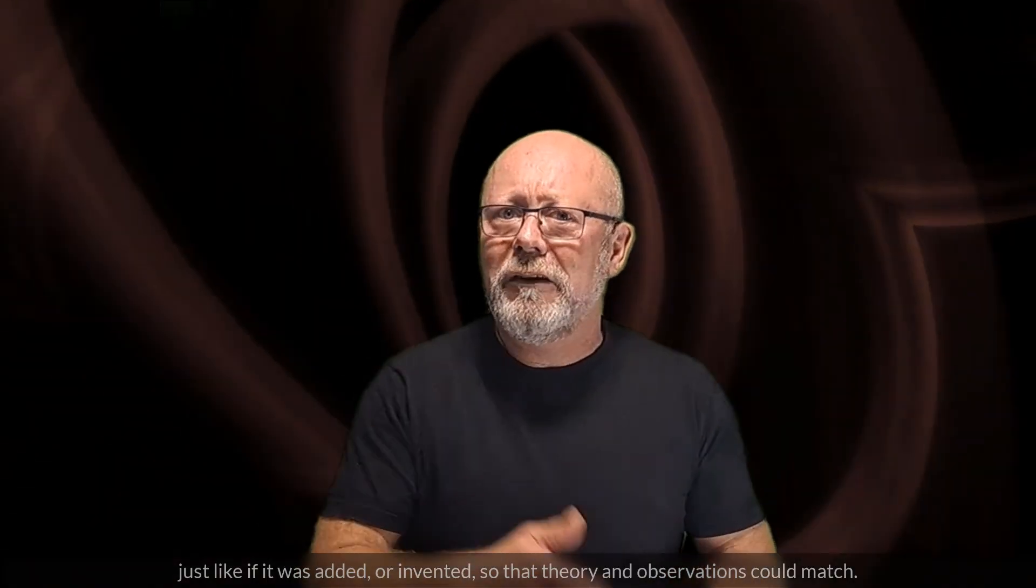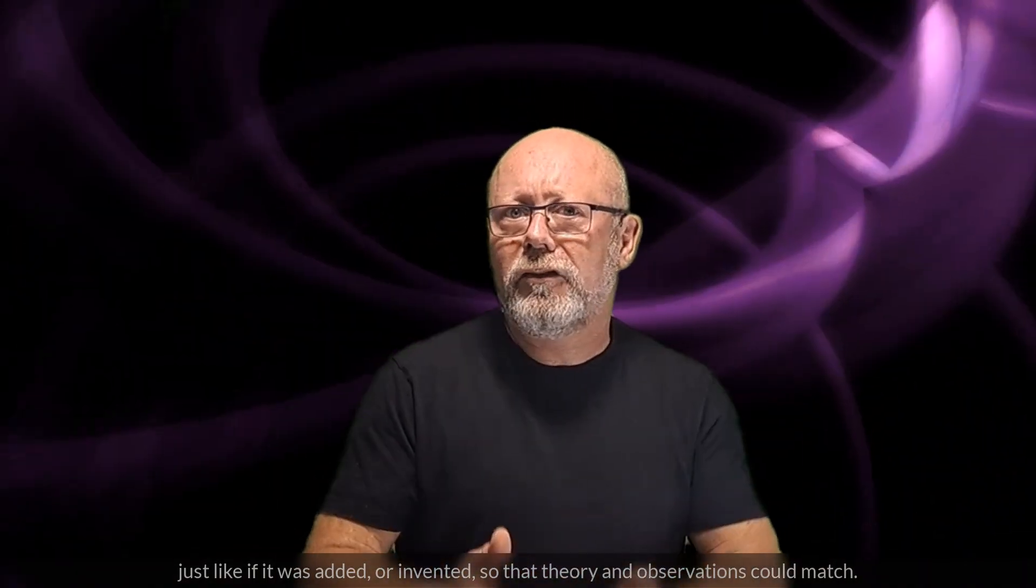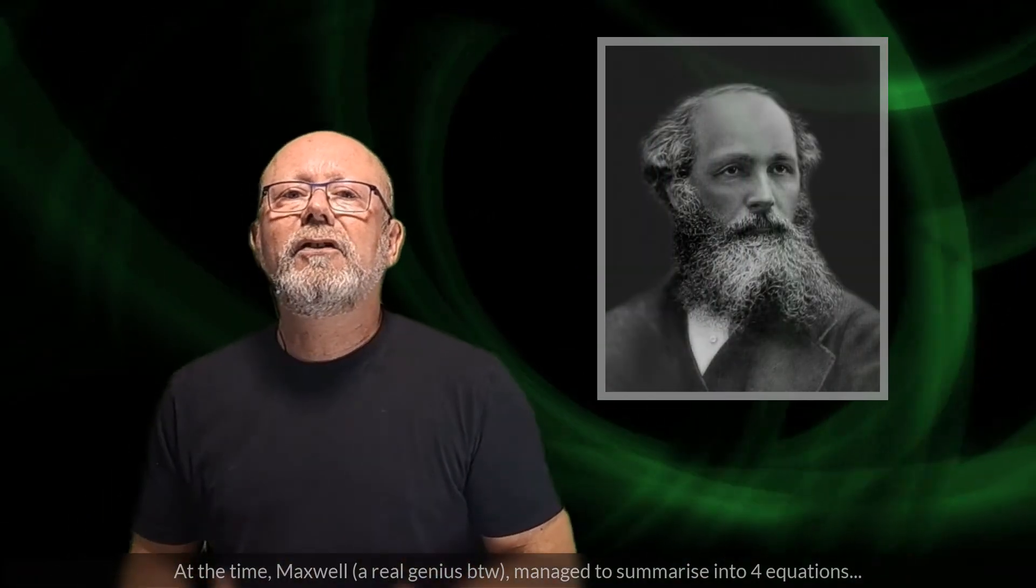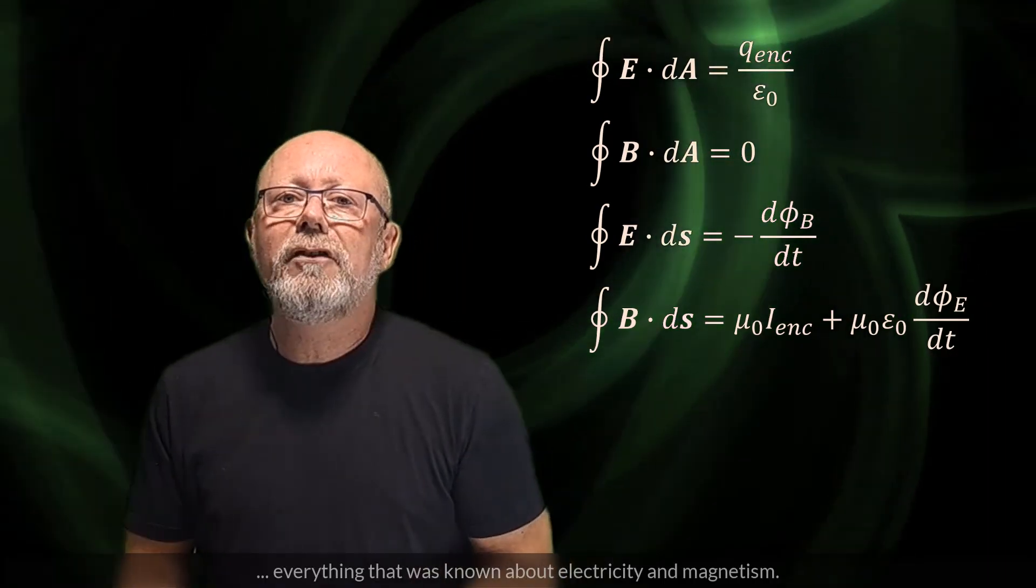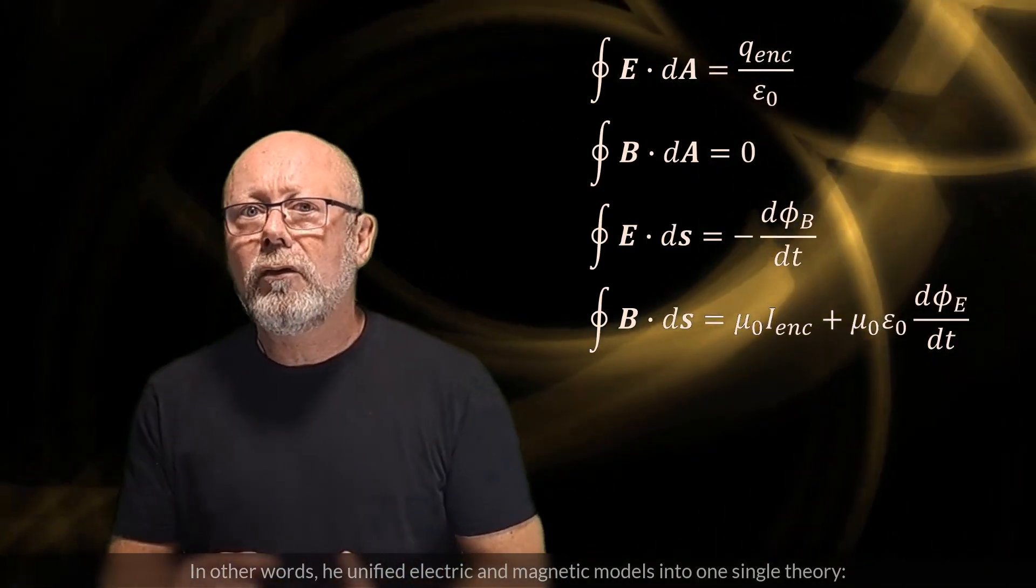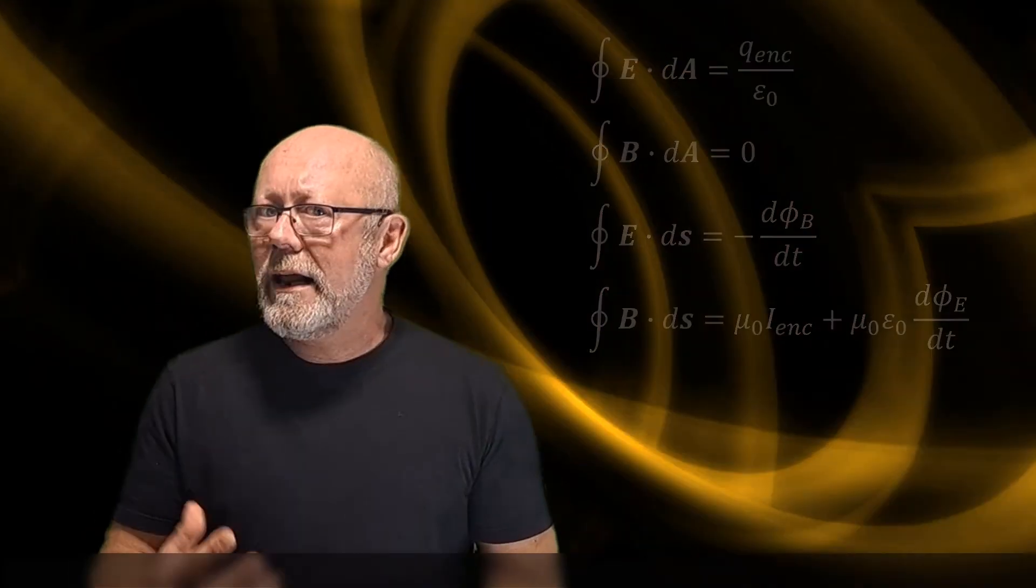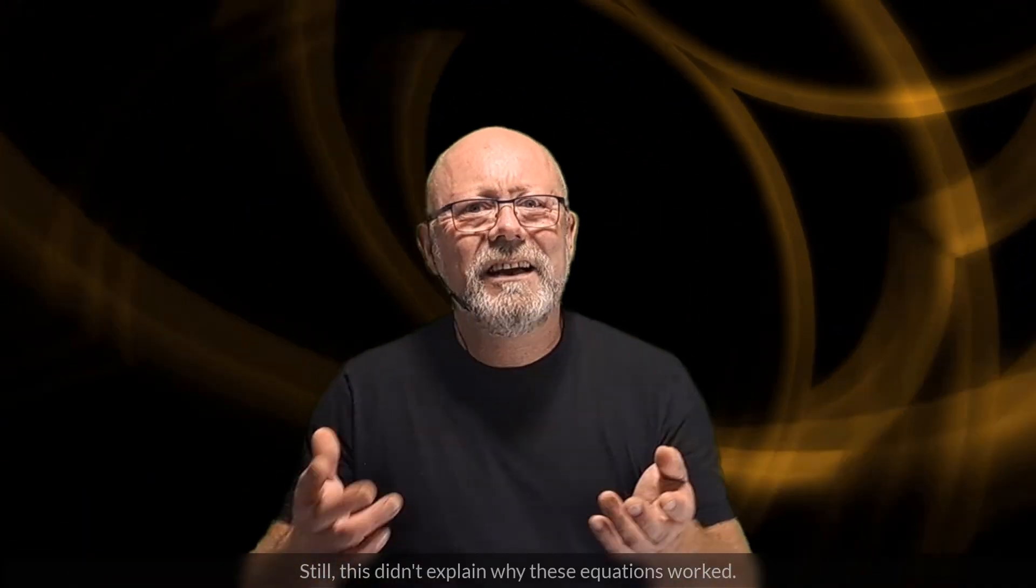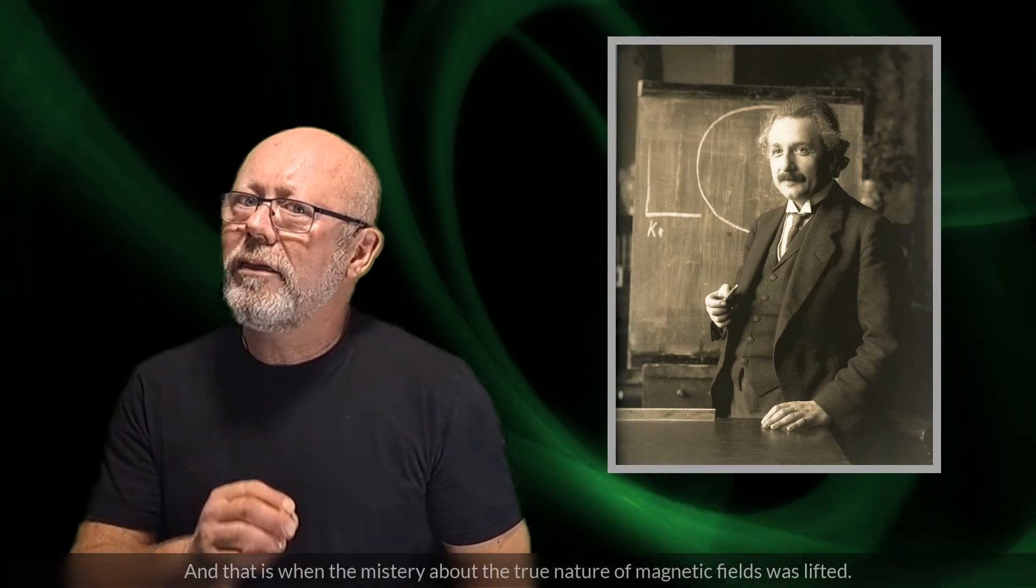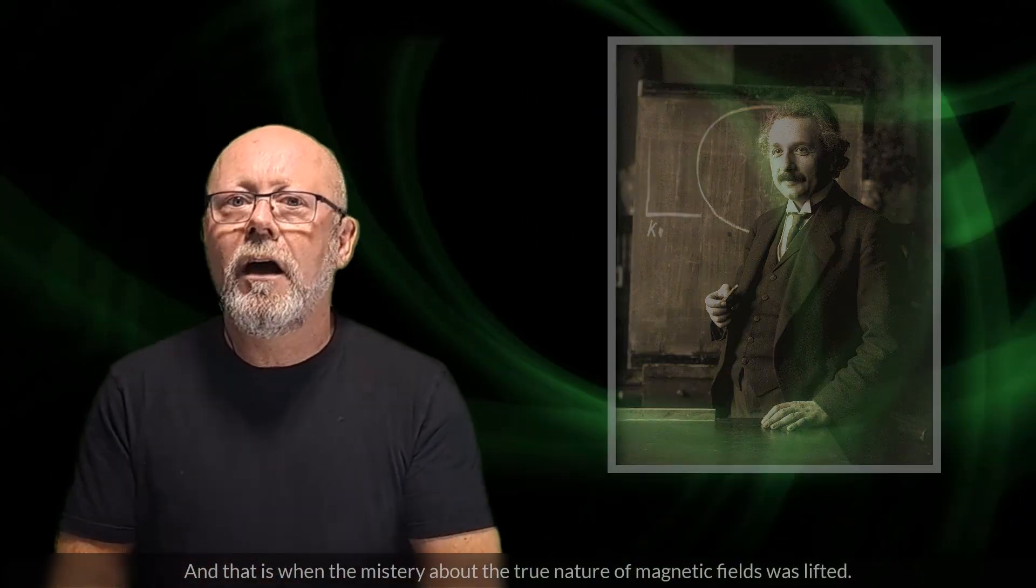But, this magnetic field seems to appear conveniently from nowhere, just like if it was added or even invented, so that theory and observations could match. This was the situation at the end of the 19th century. At the time, Maxwell, a real genius by the way, managed to summarize into four equations everything that was known about electricity and magnetism. In other words, he unified electric and magnetic models into one single theory, electromagnetism. But still, this didn't explain why these equations worked. It didn't take long, though, for someone to figure it out. And that someone was Einstein when he published his special theory of relativity. And that is when the mystery about the true nature of magnetic fields was lifted.